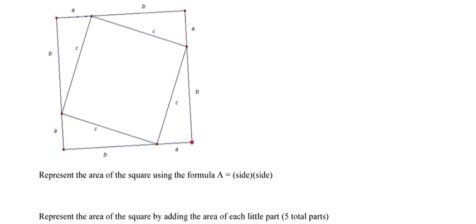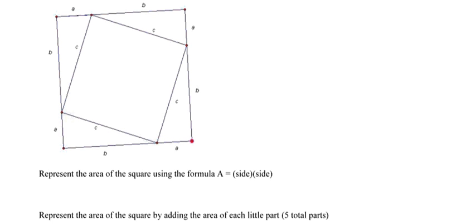So in the very beginning part of this, it says represent the area of the entire square using the formula area equals side times side. Well, the length of one side of the square is going to be A plus B. So the area of the entire square is going to be the length of the first side, A plus B, times the length of another side, A plus B.